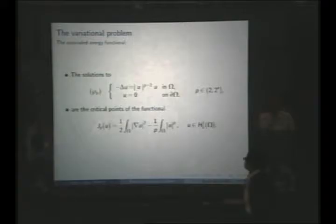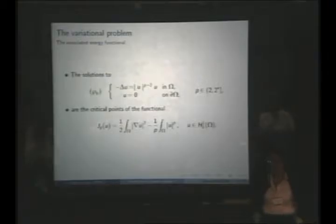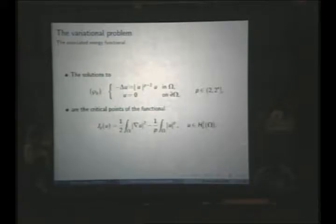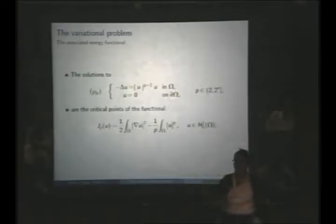For those of you who know something about Sobolev spaces, H₀¹ is the closure of the space of smooth functions with compact support in omega, in the Sobolev space of L² functions which have partial derivatives in L². For those who are not familiar with Sobolev spaces, the only important thing is that this is an infinite dimensional Hilbert space.